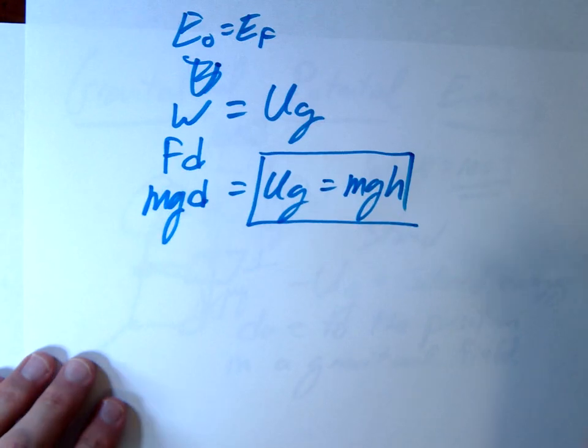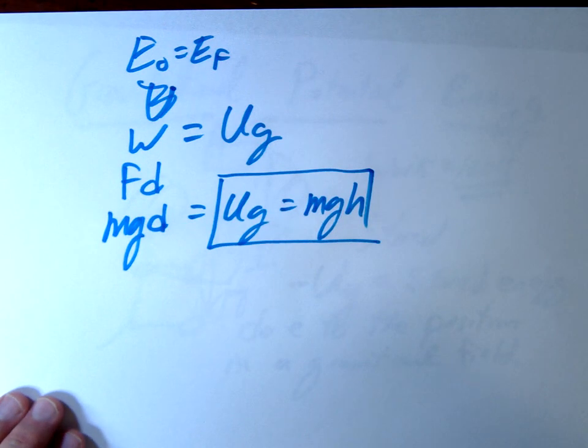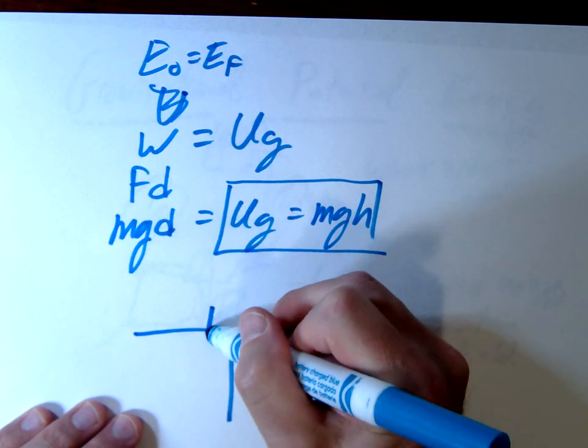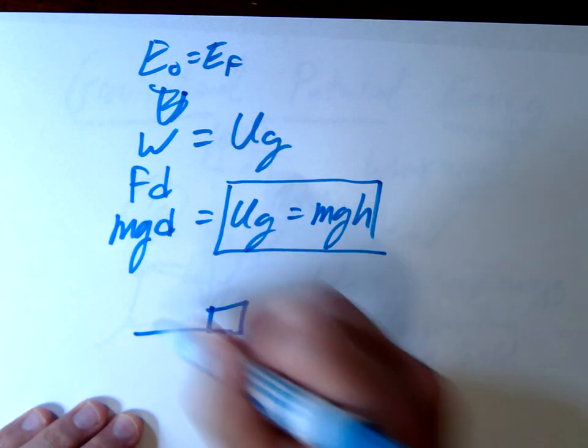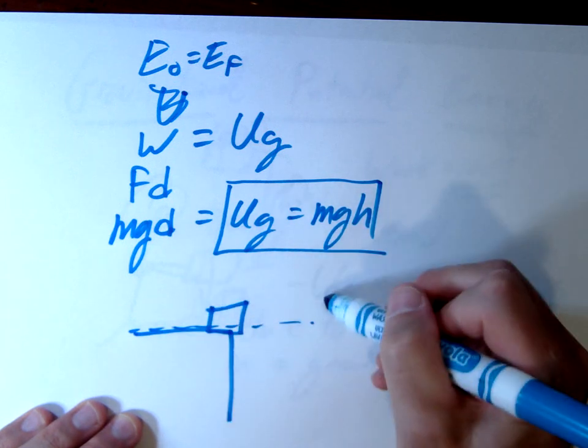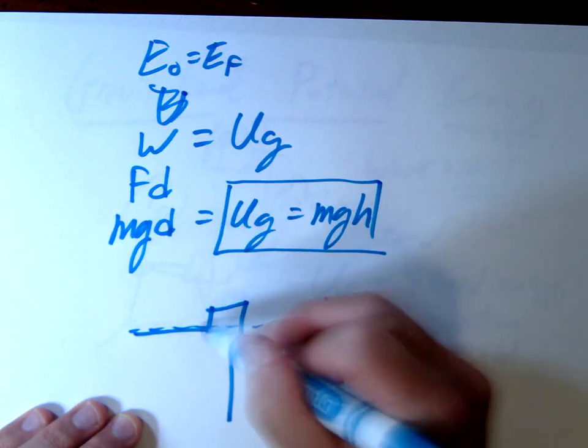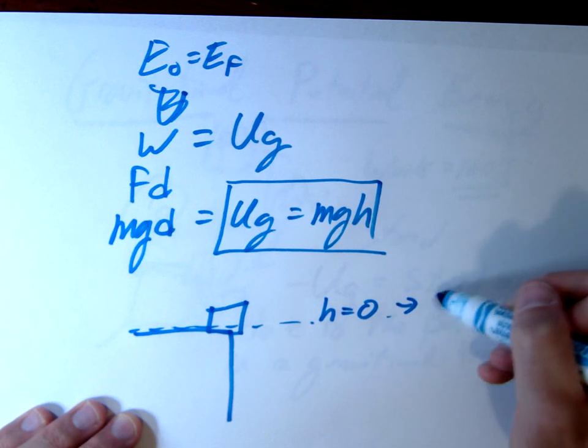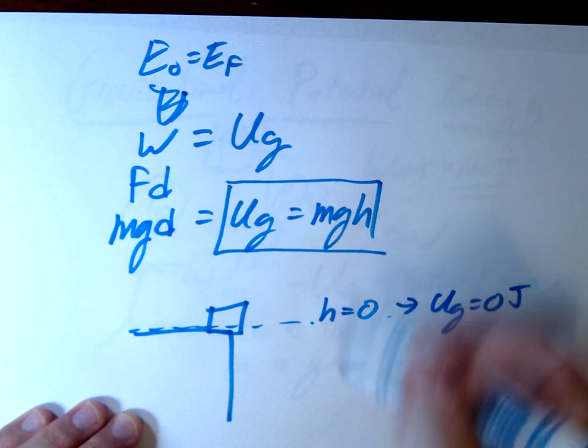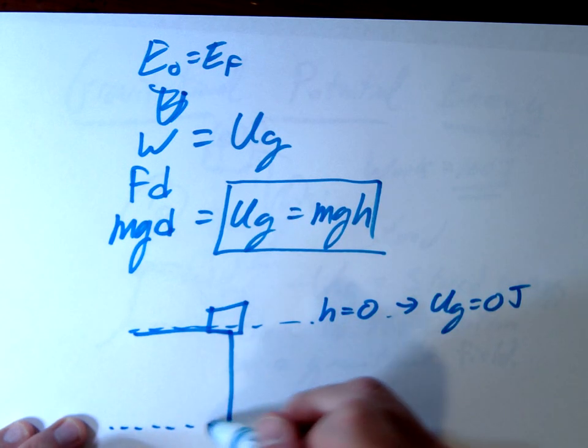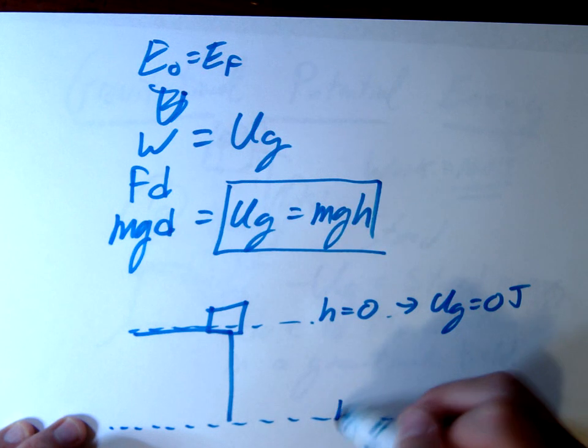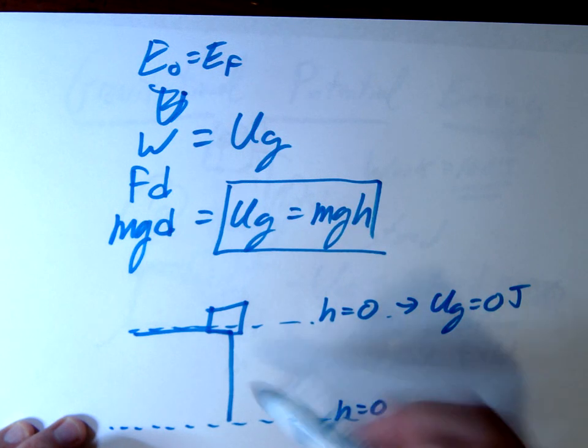Now one important thing you do have to consider is what we refer to as a reference point. So for example, if I have a book on a desk, if I call my reference point the desk itself, H equals zero, then you can see, our potential energy is also equal to zero. However, if we say, my reference point is down here, say the floor, and I make that my H equals zero,